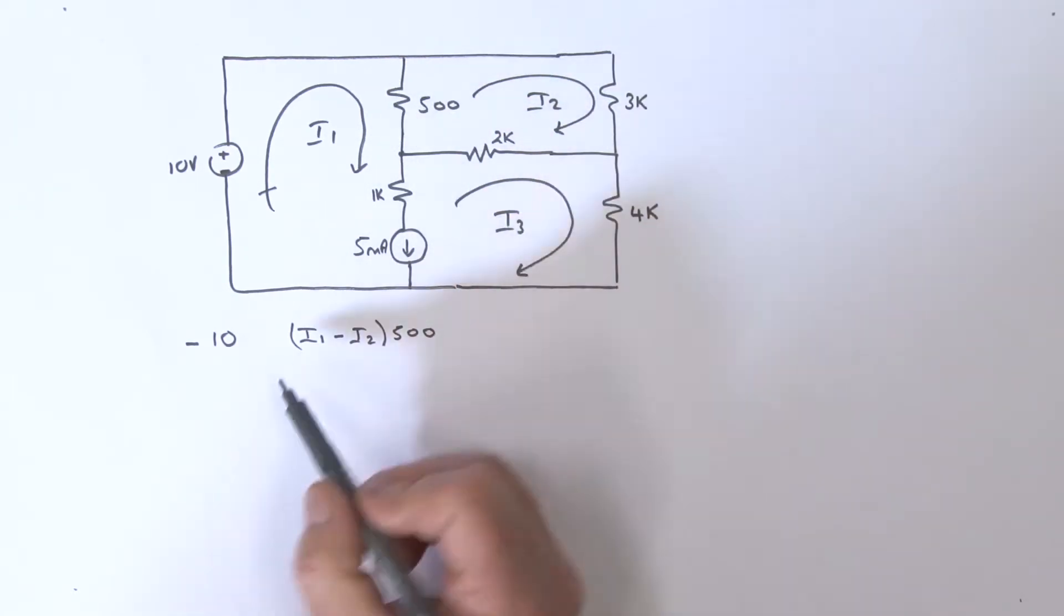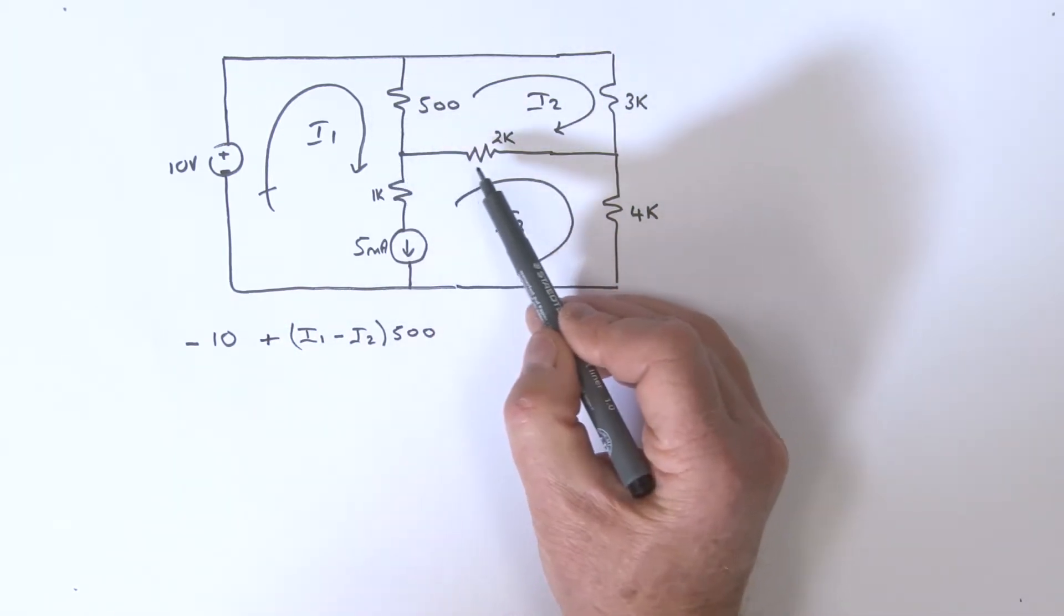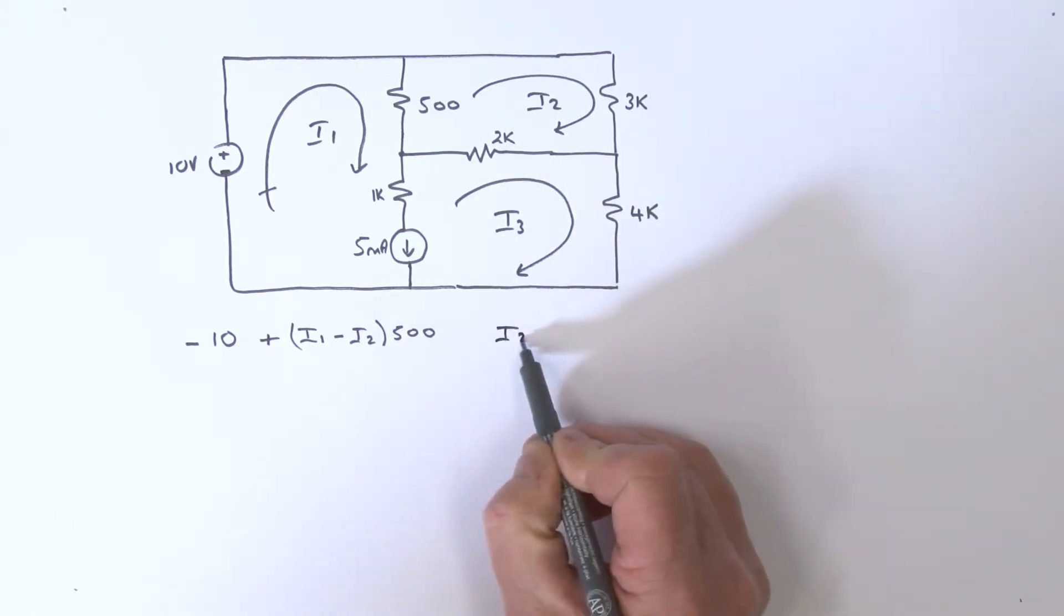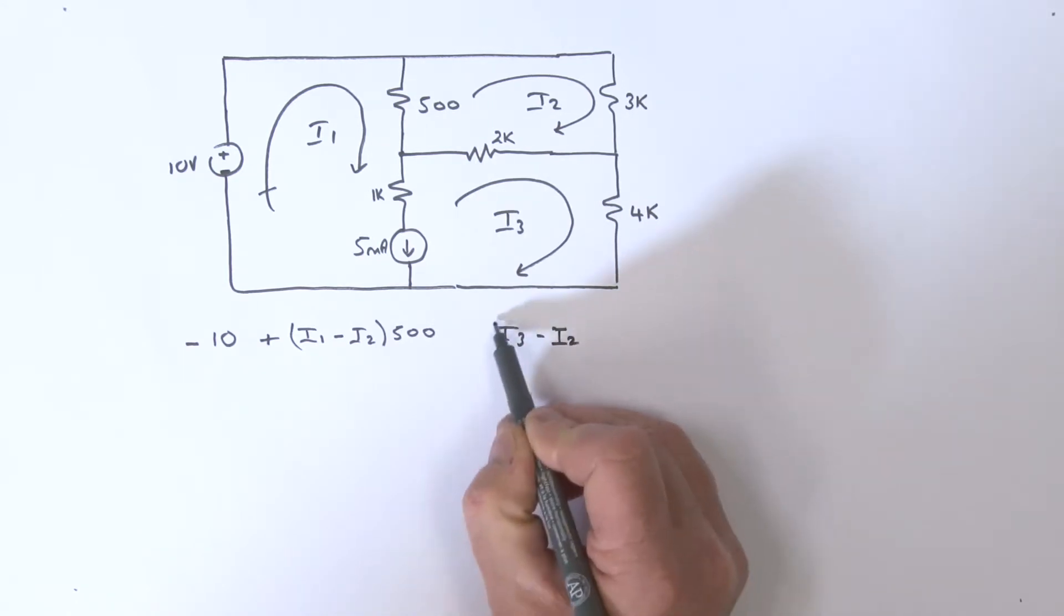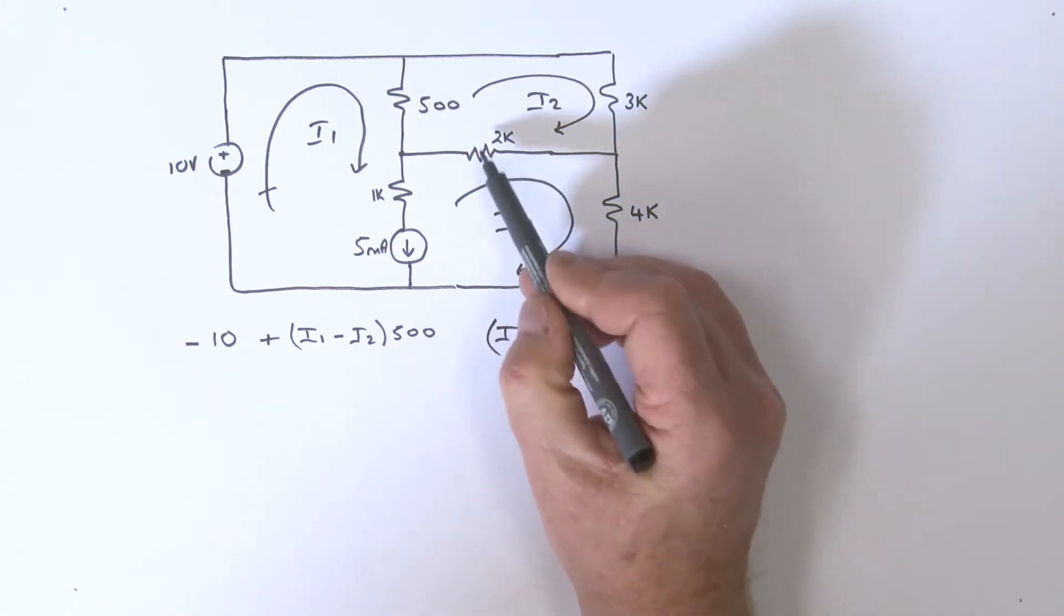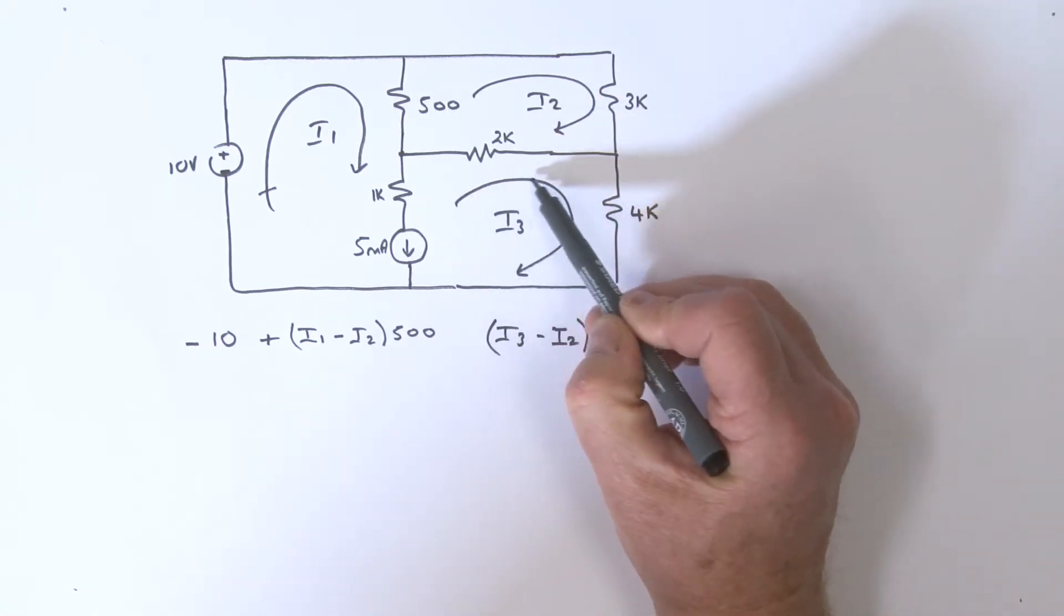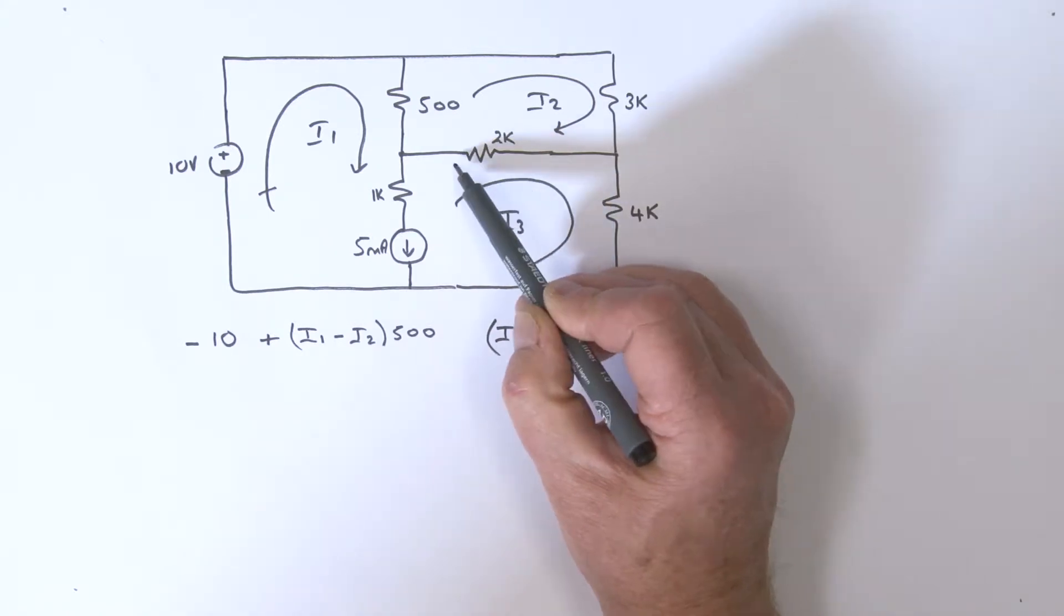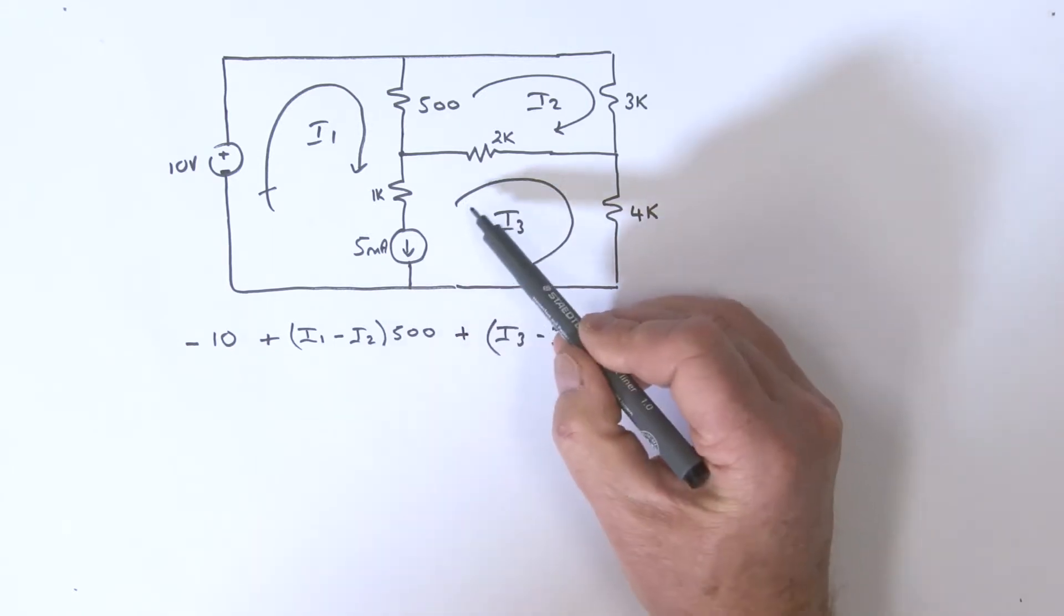...as plus-minus, so we're hitting that plus sign first. Then we've got to traverse this way, so we're looking at i3 leading - that's i3 minus i2. We close that bracket, and that's multiplied by 2k. The i3 defines a voltage plus-minus across that resistor, so we see the plus sign first.